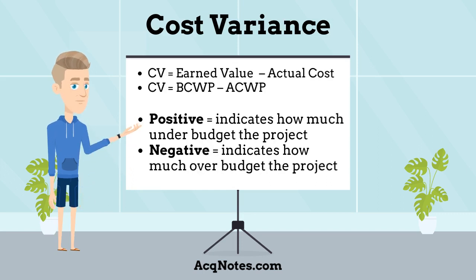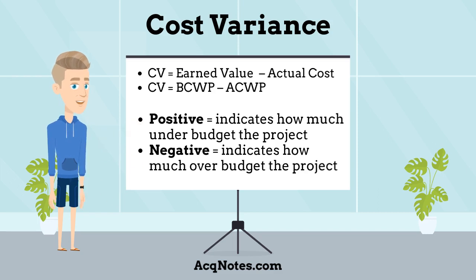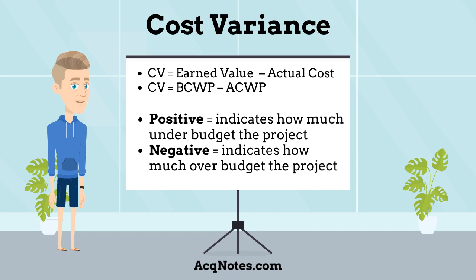Cost Variance is the first type. It is calculated using the following formulas: Cost Variance equals Earned Value minus Actual Cost. It is also calculated as Cost Variance equals Budgeted Cost of Work Performed minus Actual Cost of Work Performed. A positive result indicates how much under budget the project is, and a negative result indicates how much over budget the project is.